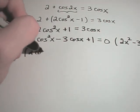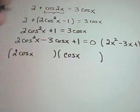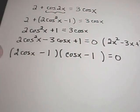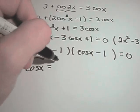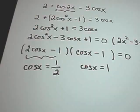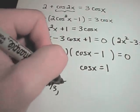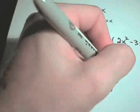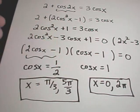Factoring 2cos²(x) − 3cos(x) + 1 gives (2cos(x) − 1)(cos(x) − 1) = 0. Setting each factor to zero: cos(x) = 1/2, which we found earlier gives x = π/3 and 5π/3; or cos(x) = 1, which occurs at x = 0 and x = 2π. So our solutions are x = π/3, 5π/3, 0, and 2π.